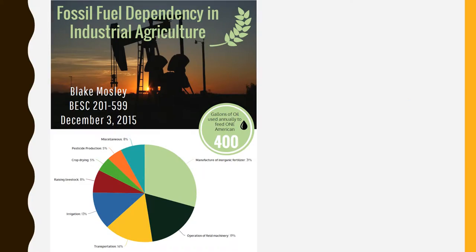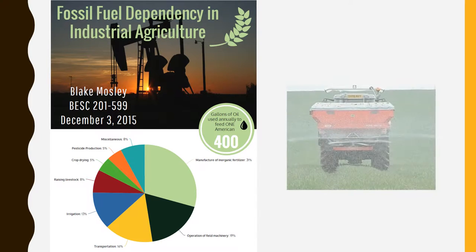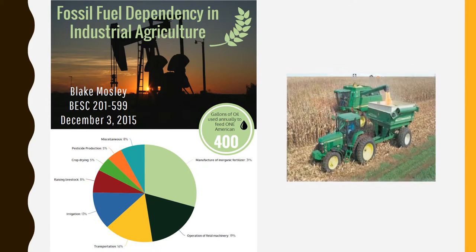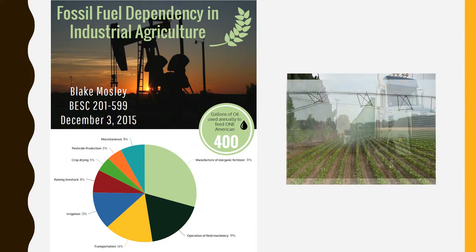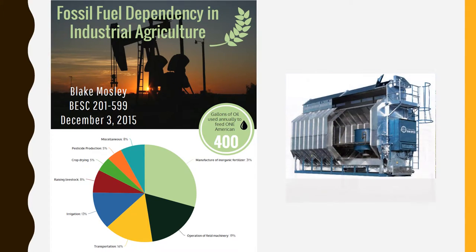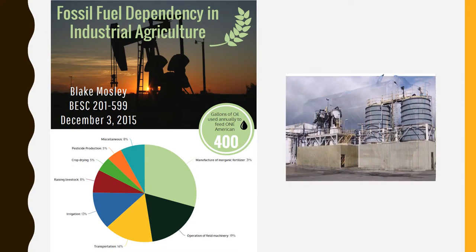As you can see, the infographic shows that 400 gallons of oil are utilized each year in order to feed a single person in North America. This is due to the fact that it is required for so many aspects of industrial agriculture, including the manufacturing of inorganic fertilizer, operation of machinery, transportation of goods, irrigation, raising of livestock, crop drying, pesticide production, and much more.